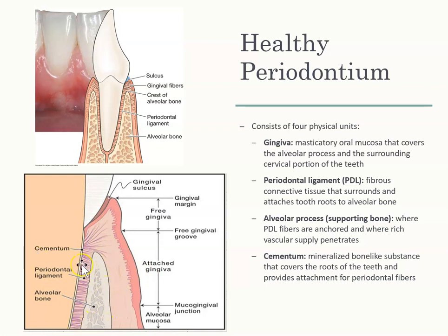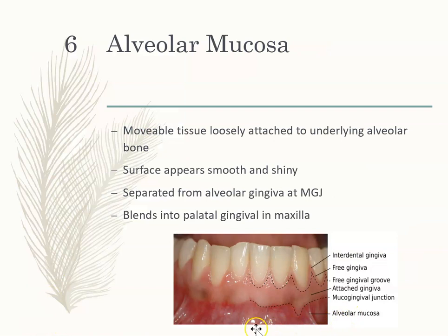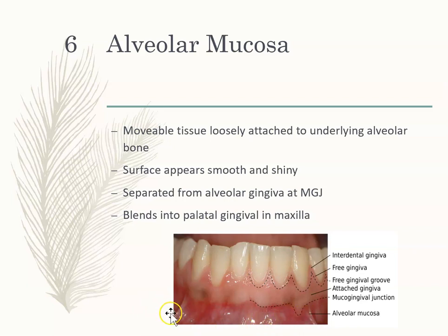This is what the bone looks like, this is what the PDL looks like, and we also have cementum right here. Alveolar mucosa is right here — this is the movable tissue. Anything that is movable is non-keratinized, meaning not hard. Alveolar mucosa is non-keratinized; it is not hard, it is movable. You can see how the alveolar mucosa is smooth and shiny. In the maxilla, it actually blends into the palate.